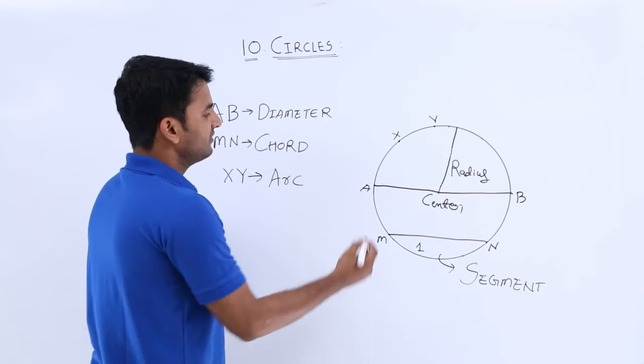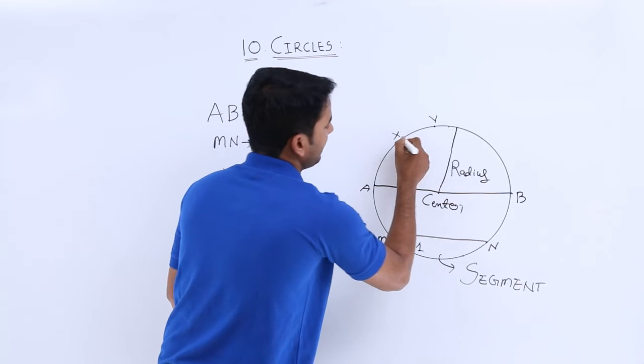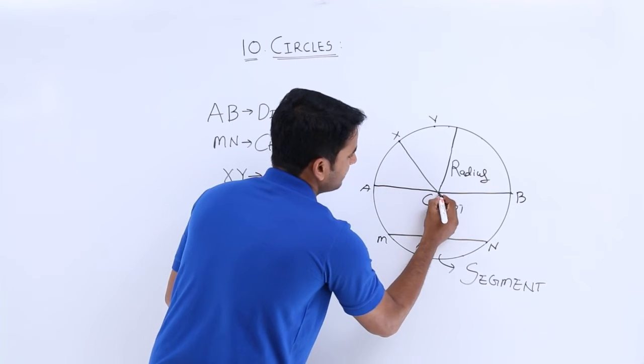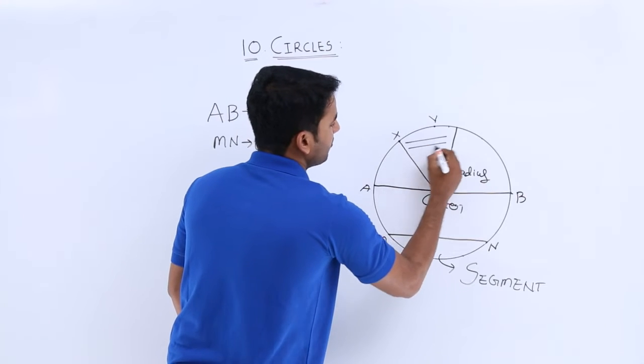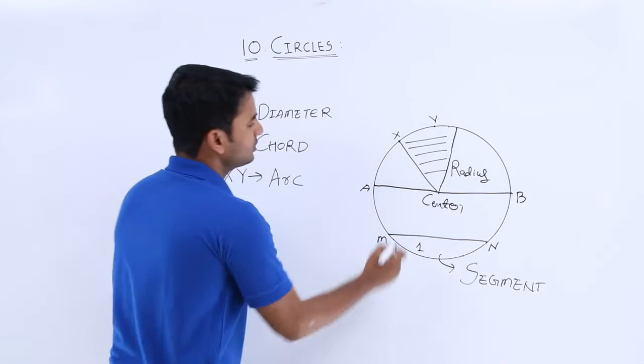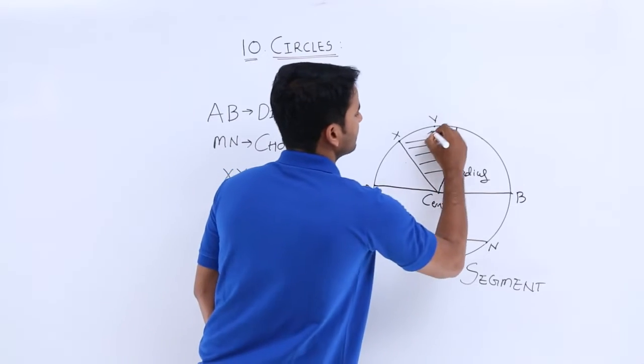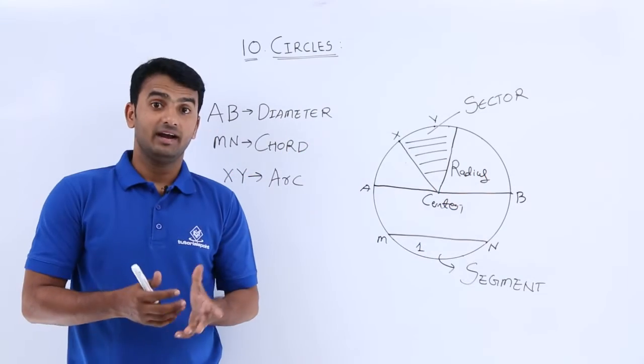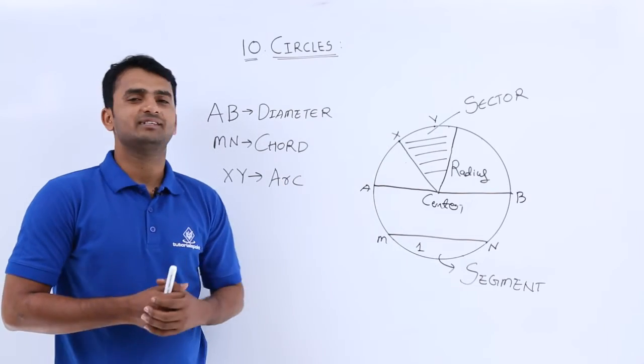And if I take another point, suppose let's take X, and if I join it with radius to the center, this portion which is between two radii and the arc is considered as a sector. And guys, these are the various terms of circle.